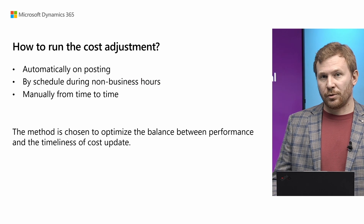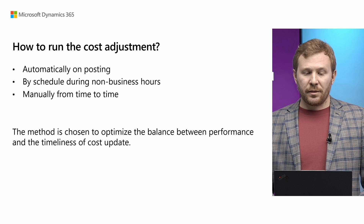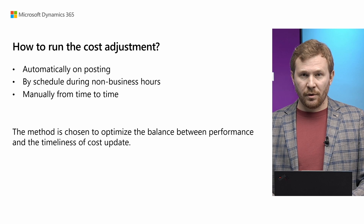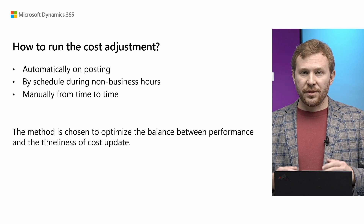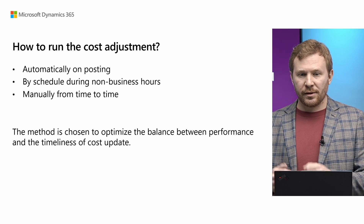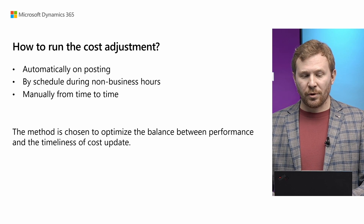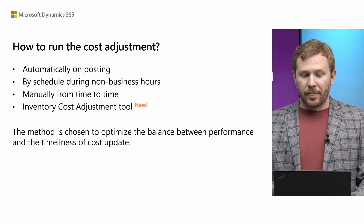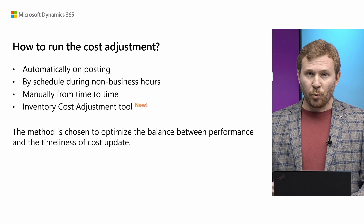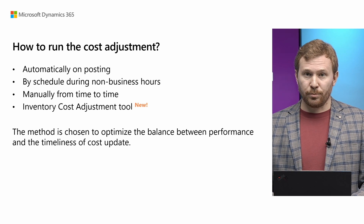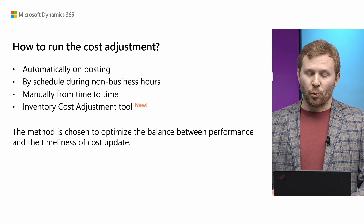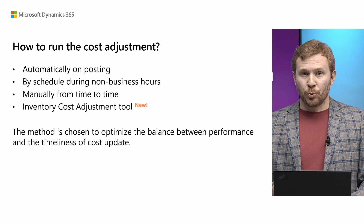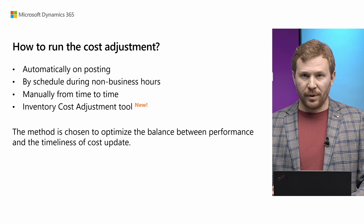How and how often do you run the cost adjustment? The answer depends on the business needs and the load of the system. Our goal is to find the right balance between performance and timeliness of cost update. Business Central now offers four ways to run the cost adjustment. I would suggest that you go live with automatic cost adjustment on posting each transaction, then once the number of entries posted each day becomes significant, switch to running cost adjustment by schedule in non-business hours.